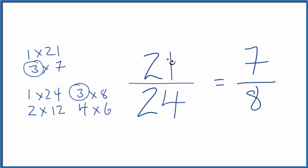If you divide 21 by 24 or 7 by 8 you'll get the same decimal answer. They're equivalent, it's just that we've simplified 21 24ths down to 7 8ths.